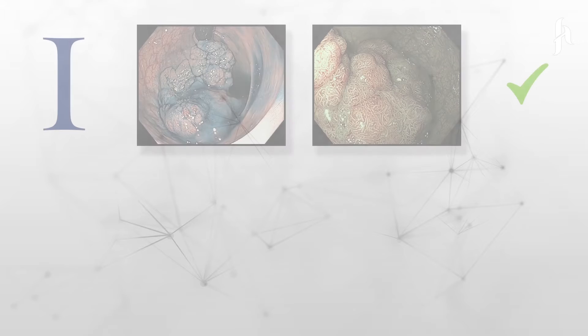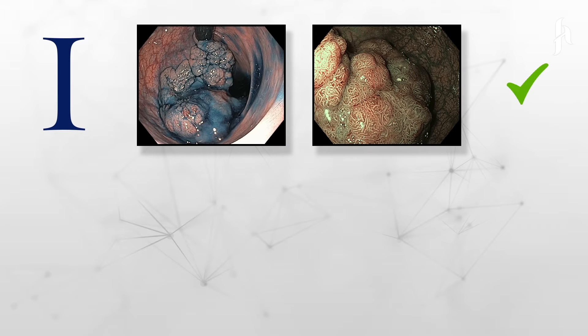At the first step, the polyp is characterized with electronic chroma endoscopy, staining endoscopy, magnified endoscopy, and endoscopic ultrasonography.